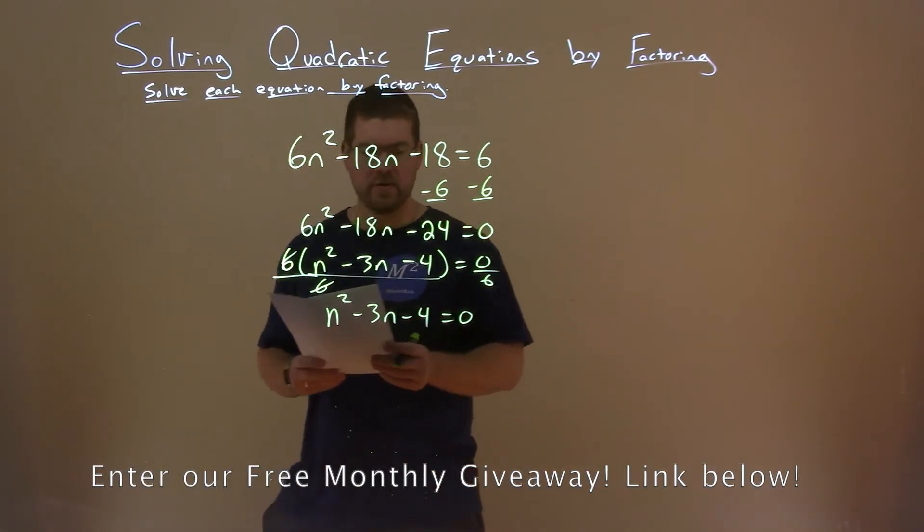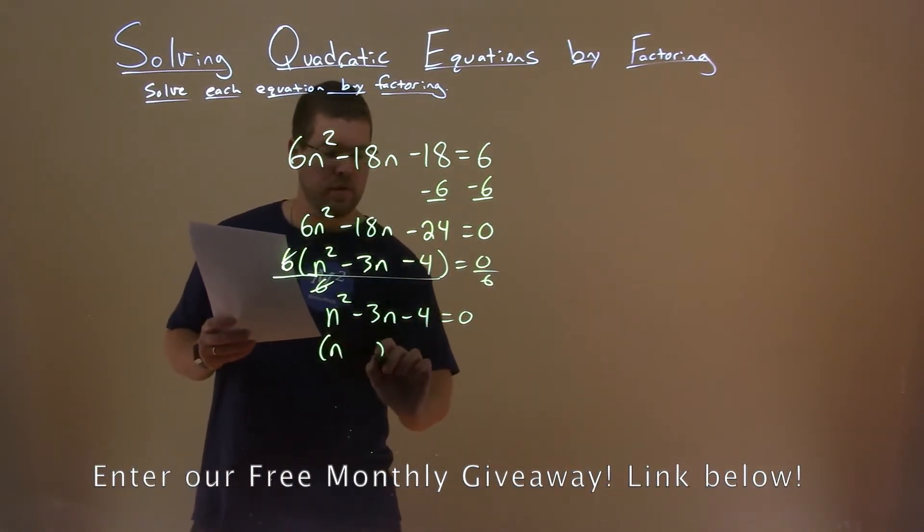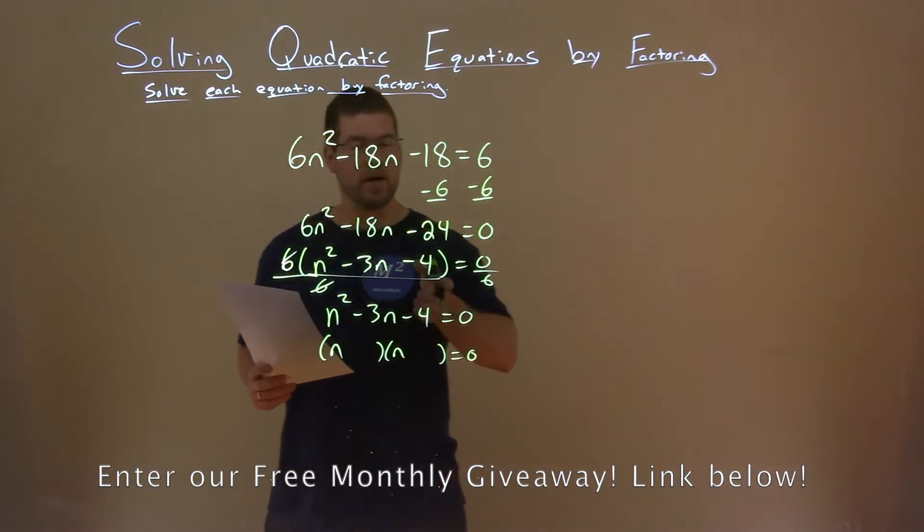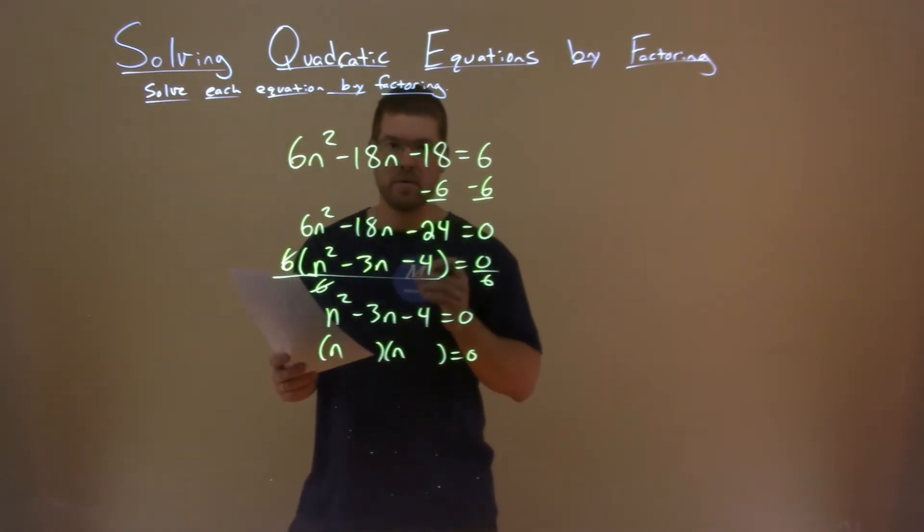So now let's factor that. We have to ask ourselves this question: What two numbers multiply to be negative 4 but add to be a negative 3?